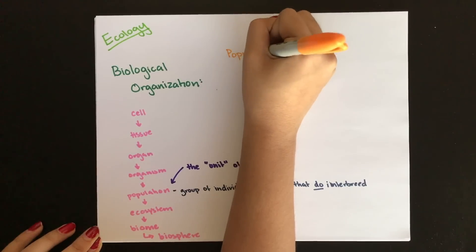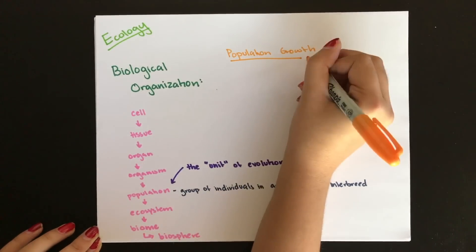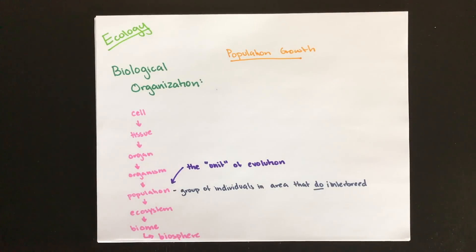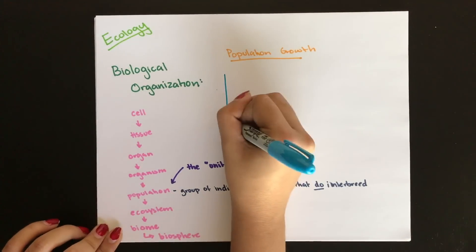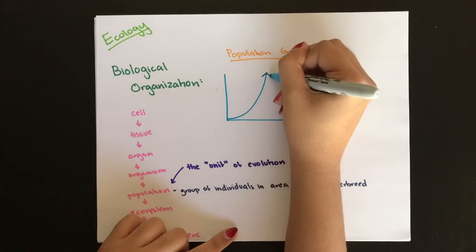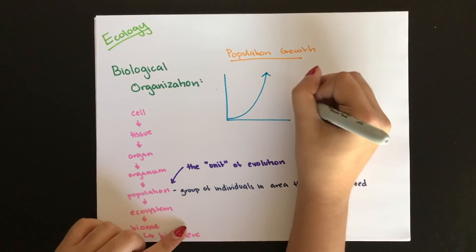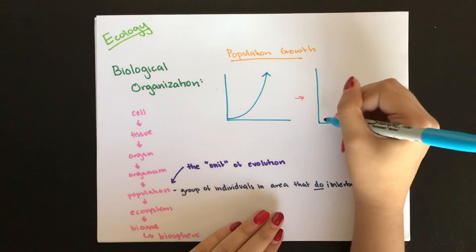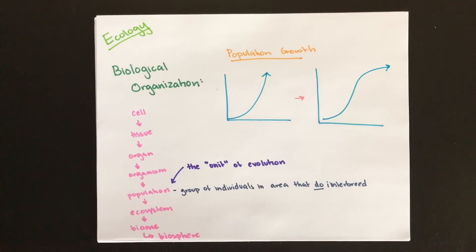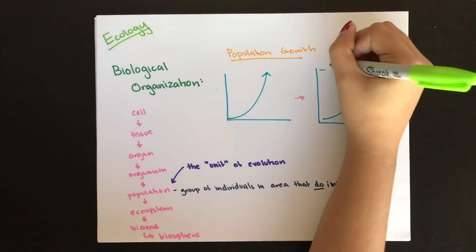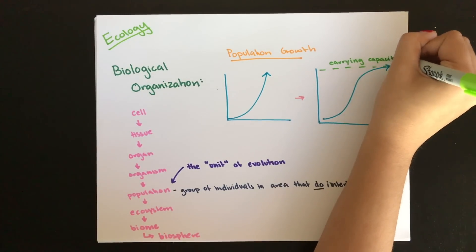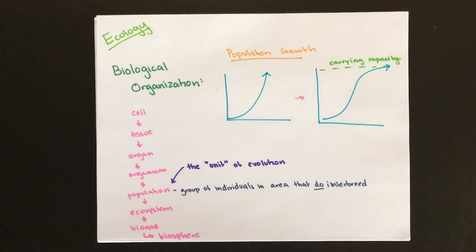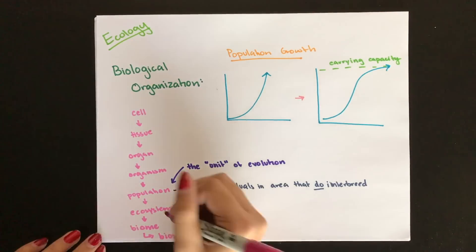Population growth occurs in two ways. The first type is exponential growth, where growth seems like it's never going to stop. After this exponential phase, there's a period where the population is unable to sustain rapid growth, and the entirety of the growth graph is then known as limited growth. The maximum population size where the graph tapers off is known as the carrying capacity — the point at which the environment can't handle any more organisms.